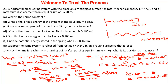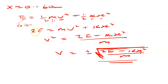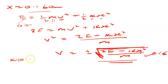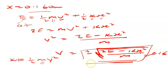Part E is asking: find the kinetic energy of the block at 0.16 meters. We know the velocity at this point from the previous calculation. Kinetic energy is simply one-half times mass times velocity squared. The mass is what was found in part C, and the velocity is the value at this same given point. After finding the velocity, plug it into this formula to find the kinetic energy at 0.160 meters.